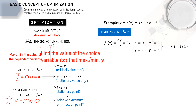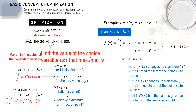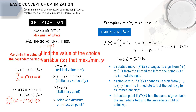The first derivative test tells us this: to check it, we have to check the values of the first derivative of the function when x is less than x₀ and when x is greater than x₀.